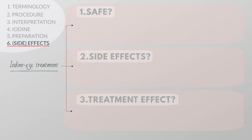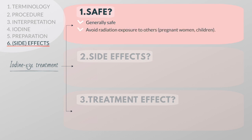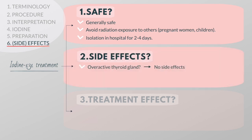Although the treatment with iodine-131 is considered to be safe, radioactive iodine produces radiation, so patients must do their best to avoid radiation exposure to others, particularly to pregnant women and young children. Depending on the dose, patients may have to stay isolated in the hospital for about two to four days. If a patient is undergoing therapy for an overactive thyroid gland, he or she will generally not experience any side effects, as the dose is quite low.